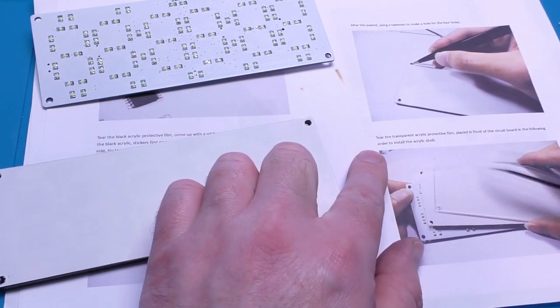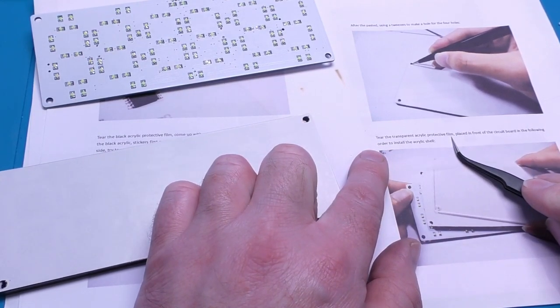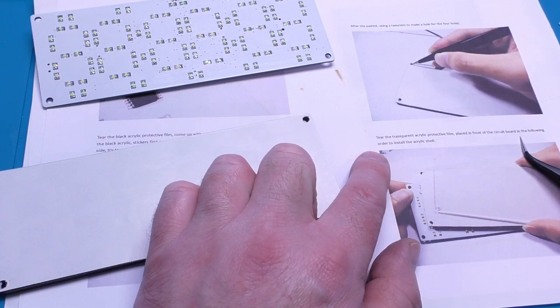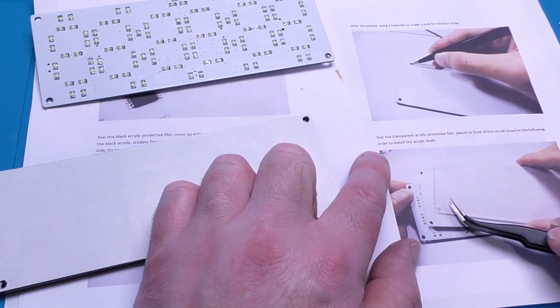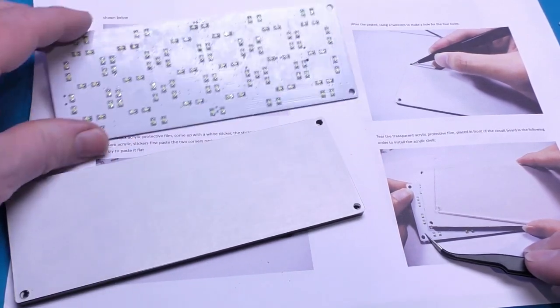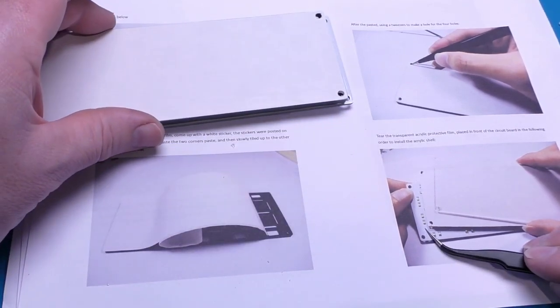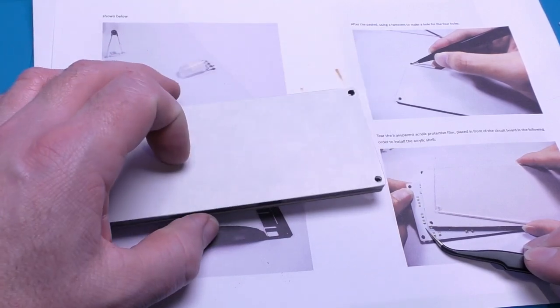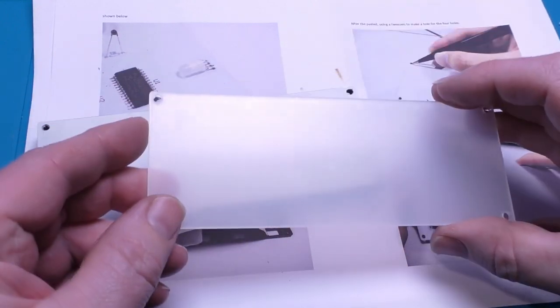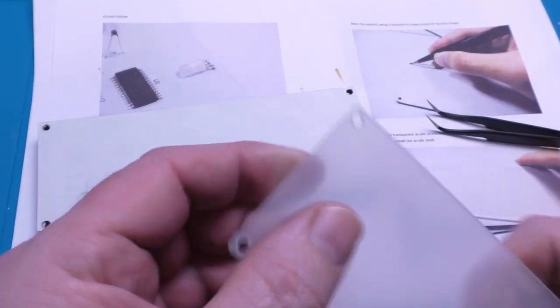Now it says tear the transparent acrylic film, placed in front of the circuit board in the following order to install the acrylic shell. So we've got our circuit, then this, we have our cover piece.